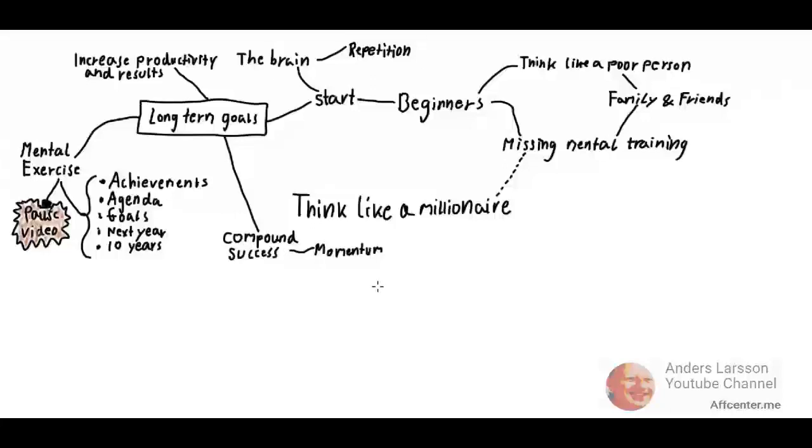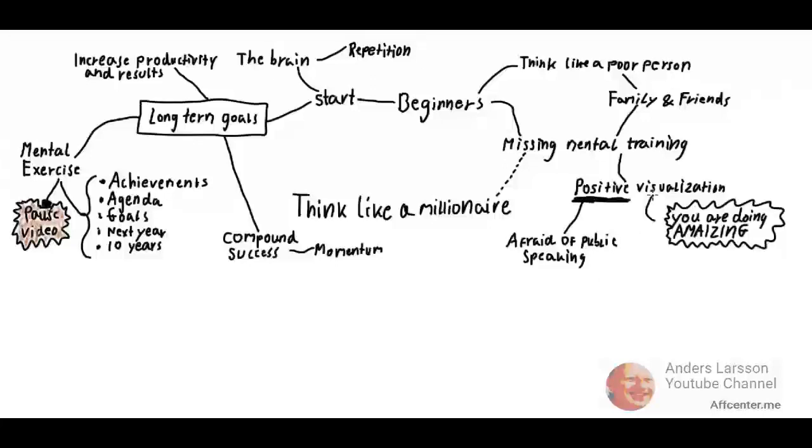The next step is to visualize what you want to achieve in a positive way. If you, for example, are afraid of public speaking, then you visualize it as if you are owning the moment and that you are doing amazing and people are excited and inspired by your speech. The worst thing you can do is to see yourself failing and being scared and running away from the audience.